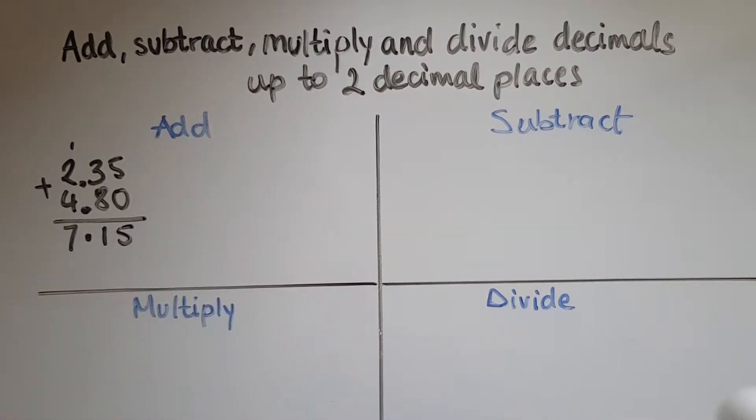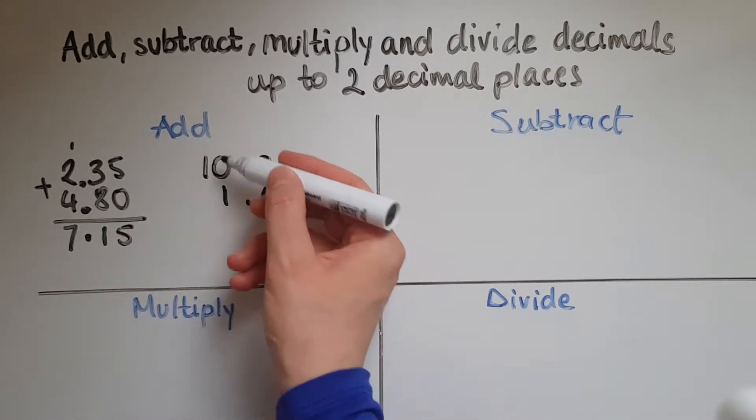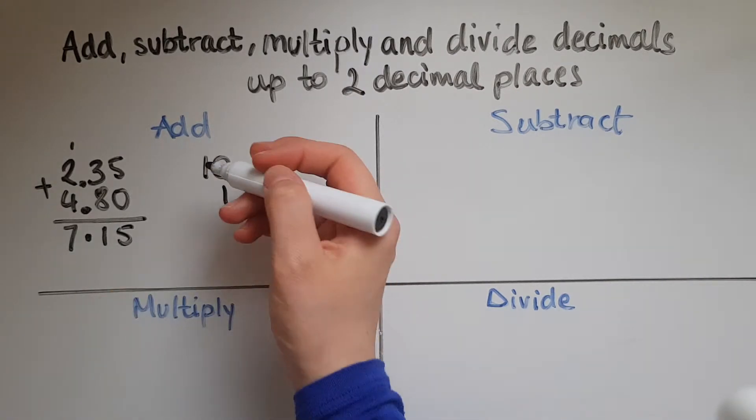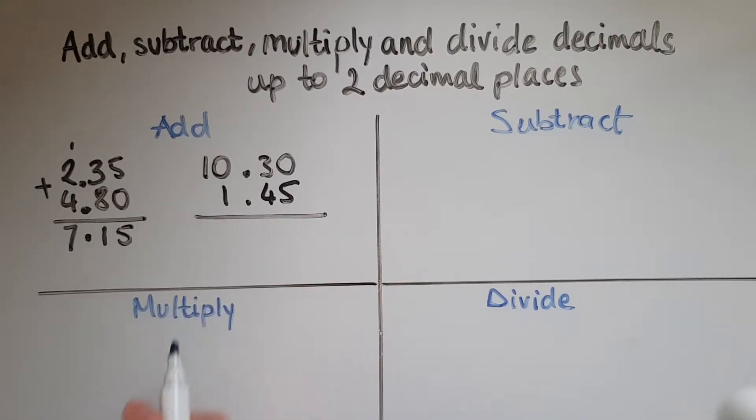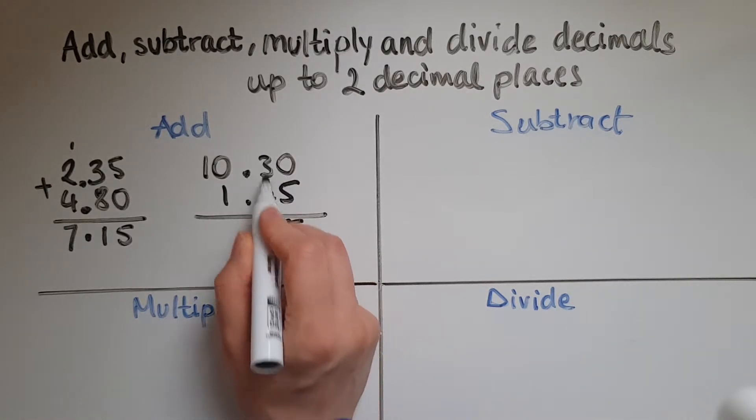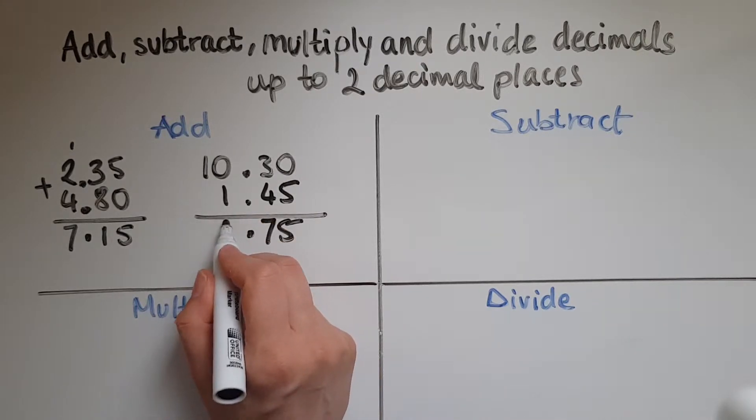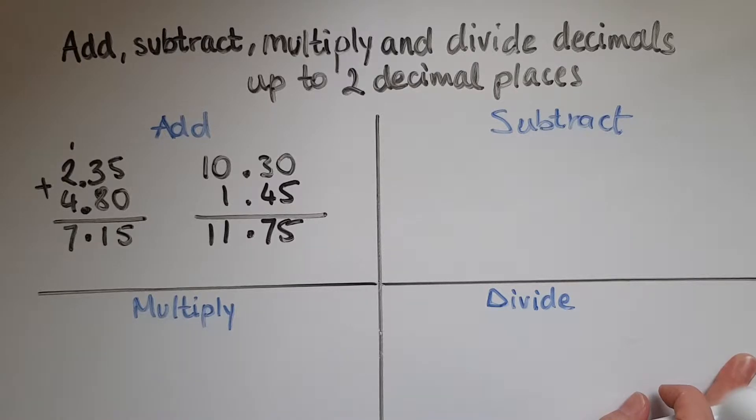But sometimes we might have to add different types of decimals. So let's say I want to add 10.3 with 1.45. Notice again the decimal is under the decimal so that we've got the digits with the same value under each other. If you have no digit at the end you could add 0 because it doesn't make a difference. So 0 and 5 is 5, 3 and 4 is 7, 0 and 1 is 1. So the thing to remember here was to line the numbers up so that we have the decimal points aligned.